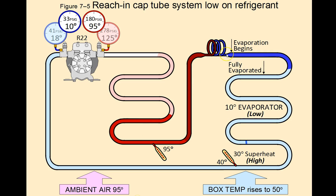So one more time: we leave the cap tube, evaporation begins, and the refrigerant evaporates very early on in the evaporator coil. The refrigerant is fully evaporated and has changed state completely. Only the first portion of the coil provides usable refrigeration. Then we begin to pick up superheat very early — it goes from 10 degrees to 20, to 30, to 40 degrees of temperature — ending up with 30 degrees Fahrenheit of superheat. Because there's not enough refrigerant to maintain box temperature, the box temperature rises to 50 degrees and won't go any lower no matter what. The customer is telling you the thermostat is set as low as it'll go, and the box temperature won't get below 50 degrees Fahrenheit.